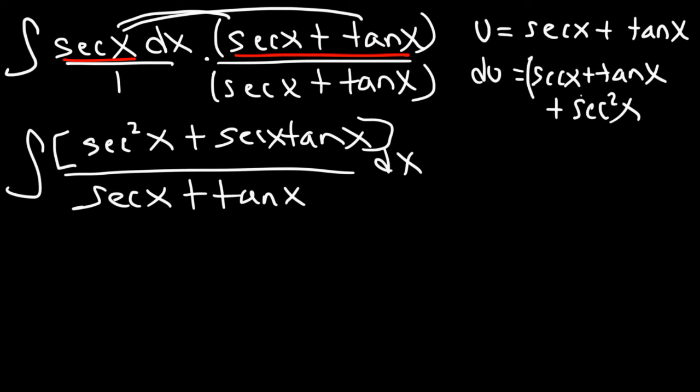Now, all of this is within parentheses times dx. So notice that we have du. du is secant tangent plus secant squared times dx, which is the same as what we have here.